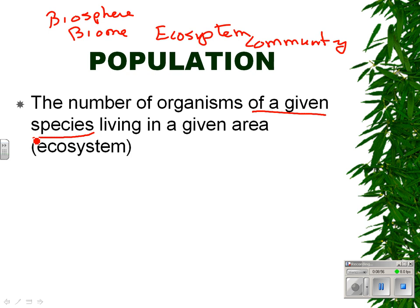And now we're going to talk about population. The population is the number of organisms of a given species living in a given area or ecosystem. So we can talk about the deer — white-tailed deer — population, the population of bluegills in the pond, or the population of people in the classroom. Those are some definitions to get us started with our topic of ecology.